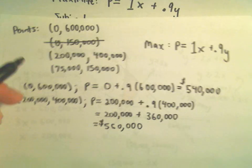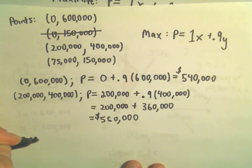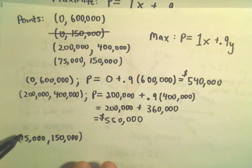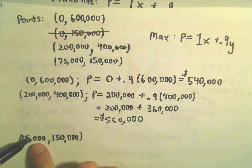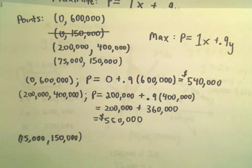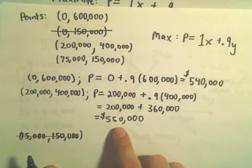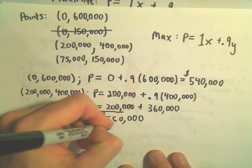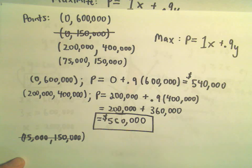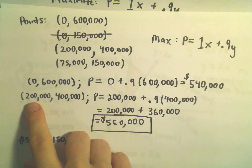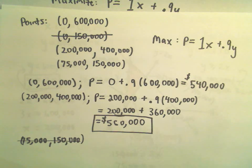The last point is (75,000, 150,000), but we're making less gasoline and less fuel oil than before, so there's no way that gives our maximum profit either — you can check if you want. Our biggest value is 560,000. So the maximum profit this company can make in one day is $560,000, and to achieve it, they should make 200,000 gallons of gasoline and 400,000 gallons of fuel oil.